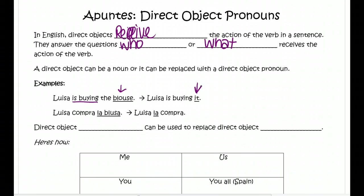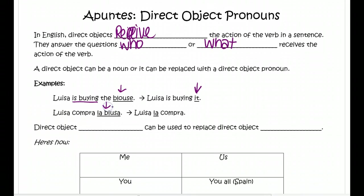You can do the same thing in Spanish. So if you look at this sentence in Spanish: Luisa compra la blusa. ¿Qué o quién compra Luisa? La blusa — that's our direct object noun. We can replace it with a pronoun, which basically means 'it,' which in this case would be 'la.'